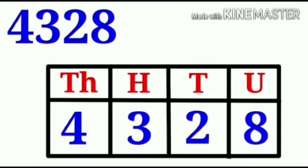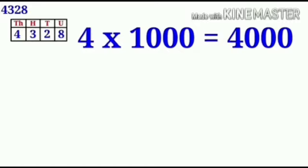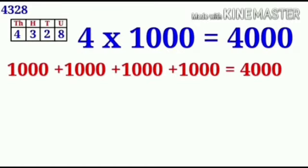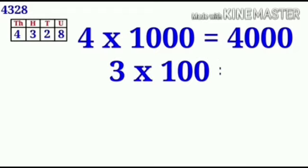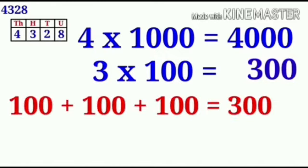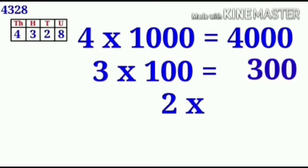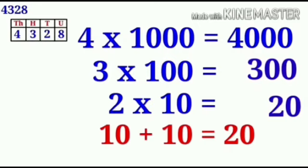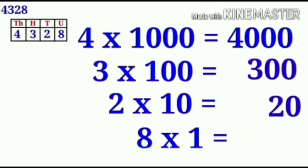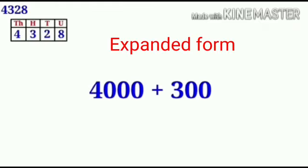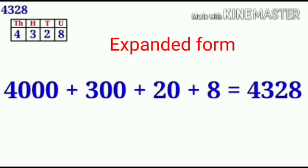Now let's expand this number. Four is under the thousands place, three is under the hundreds place, two is under the tens place, and eight is under the units place. Four times 1000 is equal to 4000. Three times 100 is equal to 300. Two times 10 is equal to 20. Eight times one is equal to eight. So 4000 plus 300 plus 20 plus 8 is equal to 4,328.